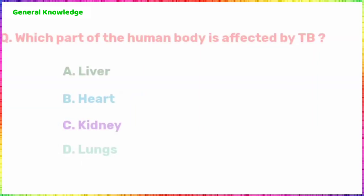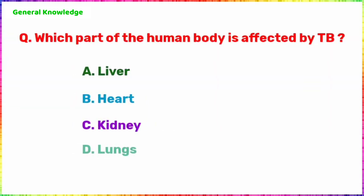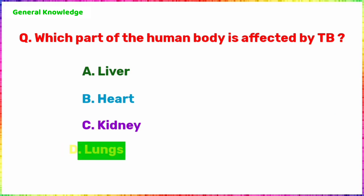Which part of the human body is affected by TB? The correct answer is Option D, Lungs.